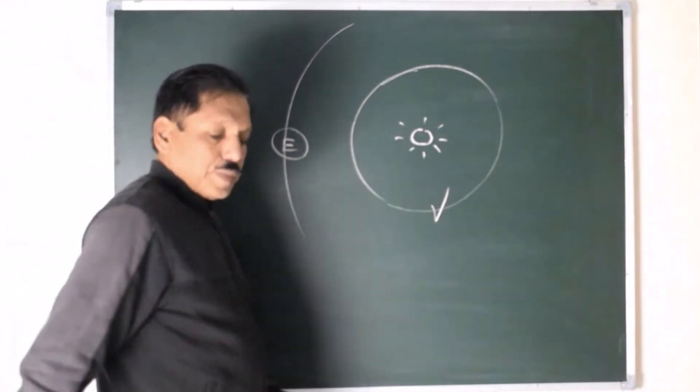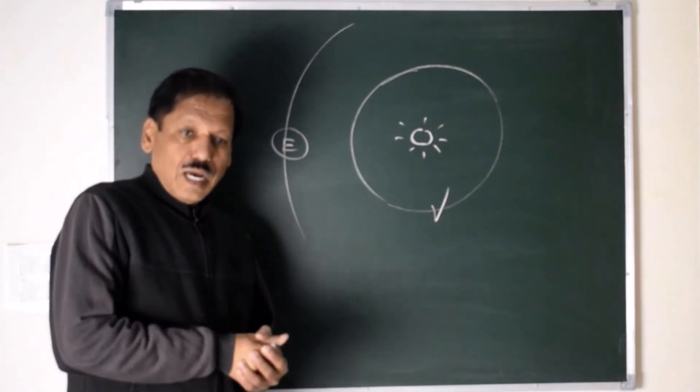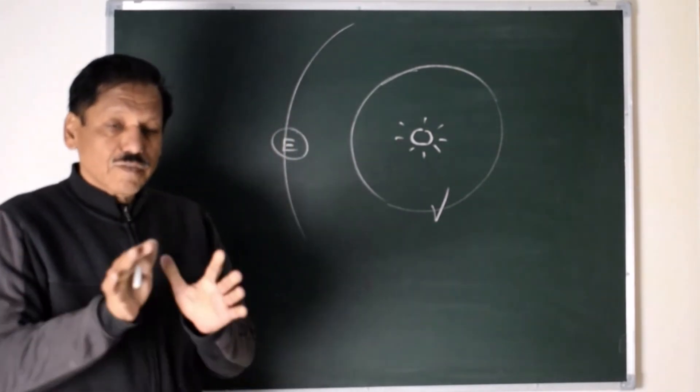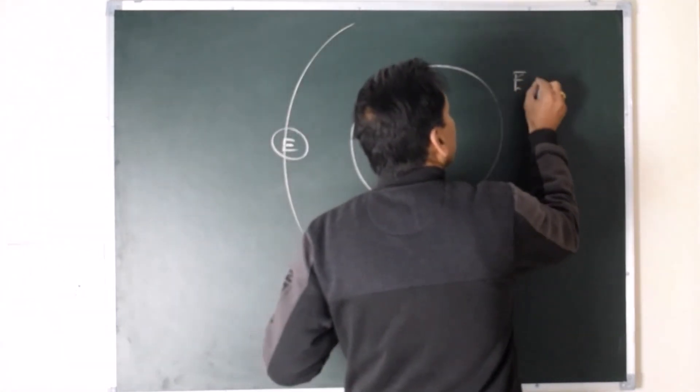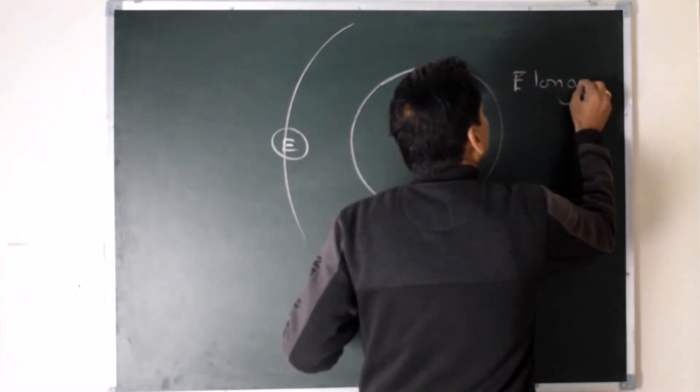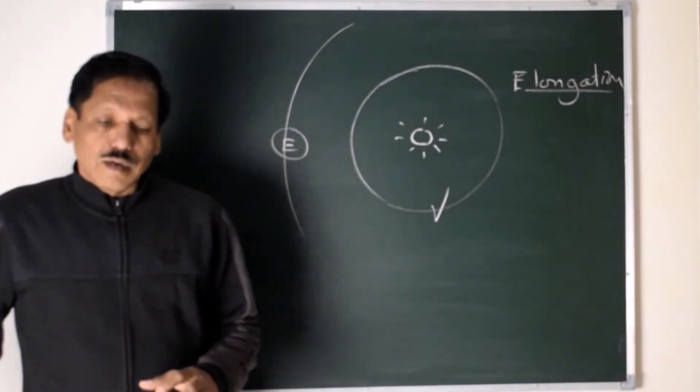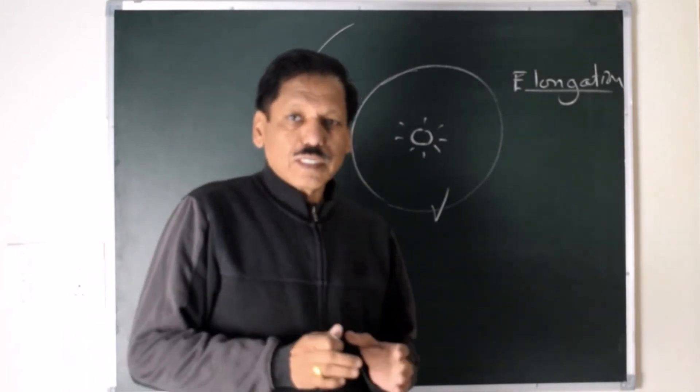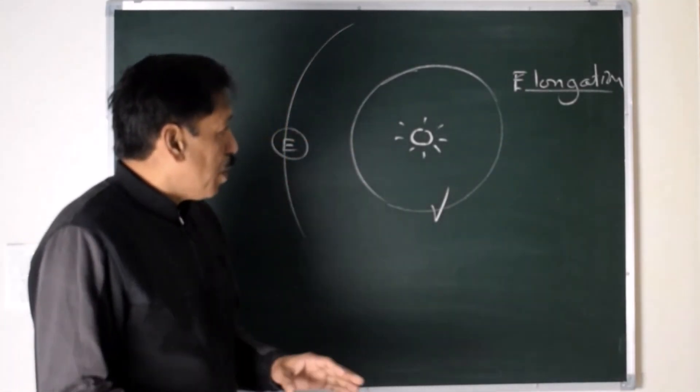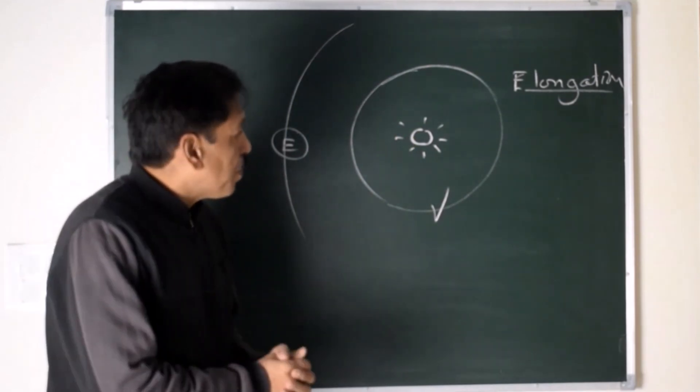Now to understand the terms like conjunction and opposition, let us first understand elongation. What is elongation? There are a few terms which must be understood in correct perspective to understand astronomy in a proper way. Elongation is one of such terms, a very important definition.